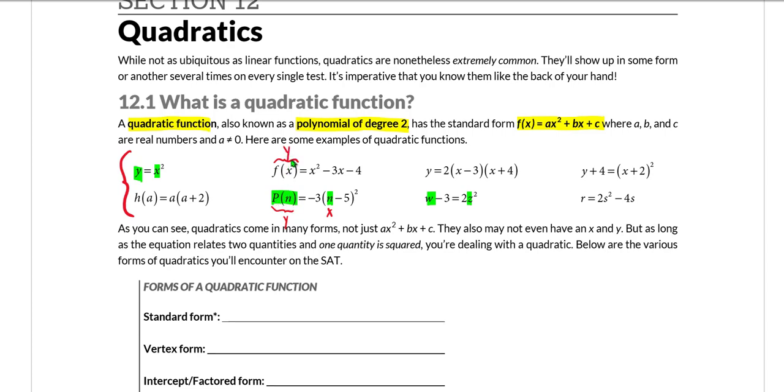So all of these equations here have two variables: y and x, w and z, p(n) and n.